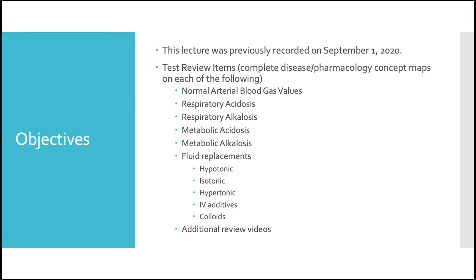You need to memorize the normal arterial blood gas values. To do that, go to page 288 in your main textbook and look for table 1614. It shows you your normal blood gas ranges. Anything below or above those ranges are going to be abnormal. You're going to have to determine which disruption your patient is in based on those blood gas values.